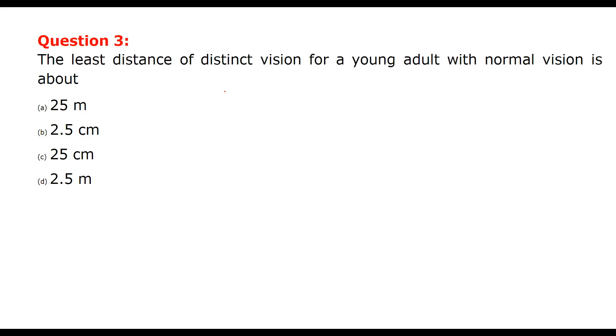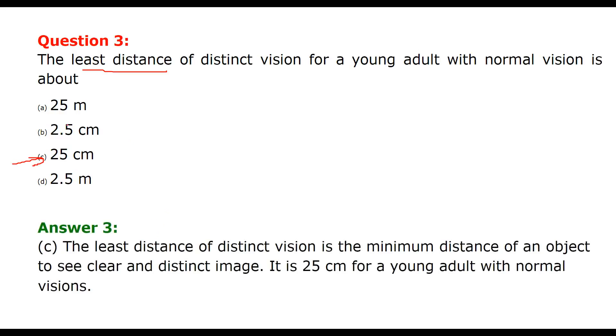The least distance of distinct vision for a young adult with normal vision is about - so we are being asked about the least distance. This is 25 centimeter. So we'll choose C.